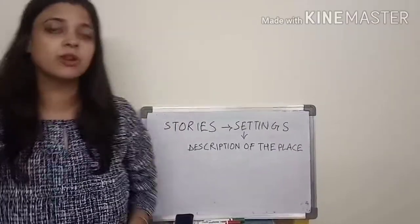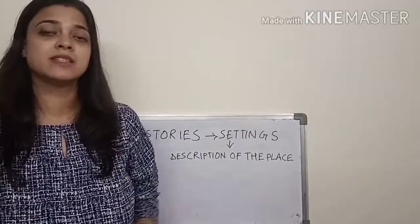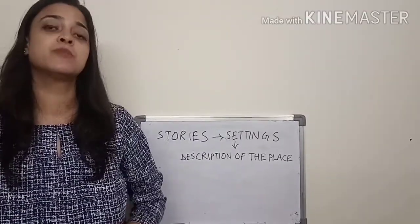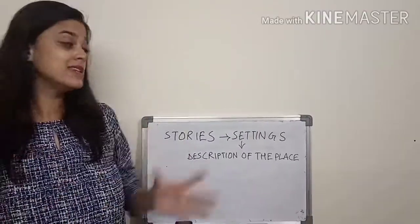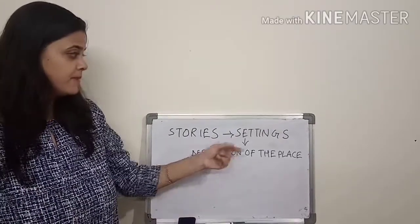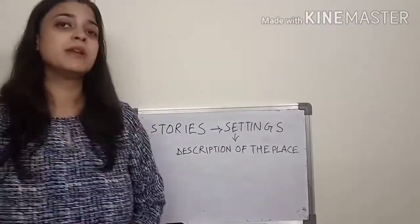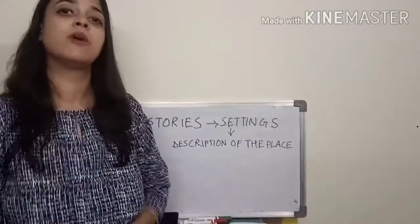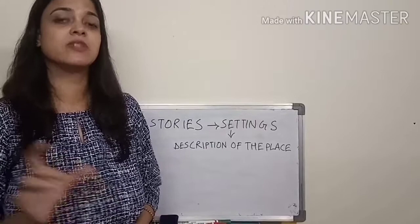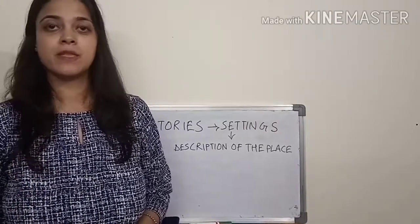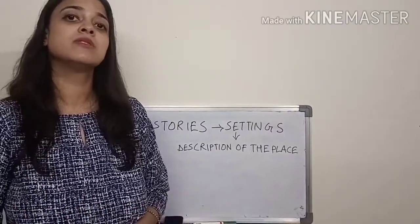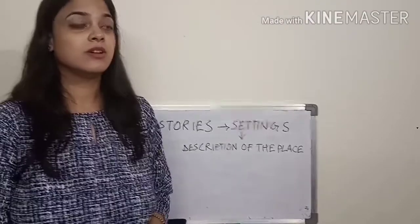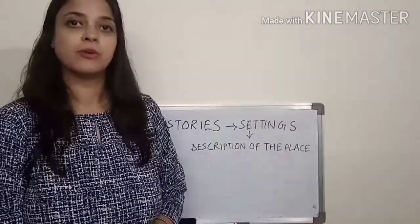Now here we'll talk about stories that have settings which again give a description of or an idea of the place. The description can be in terms of the time. Say for example, when Joe was a little boy, it gives you a description of the time. It can also give you a description of the weather. Say a noisy thunderstorm.